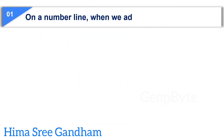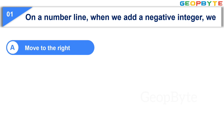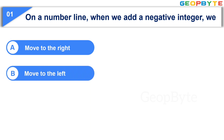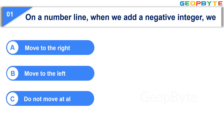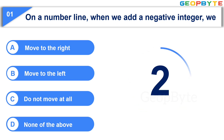The first question is: On a number line, when we add a negative integer, we — Option A: move to the right, Option B: move to the left, Option C: do not move at all, Option D: none of the above. Your time starts now. Your time is up. The correct answer is Option B: move to the left.